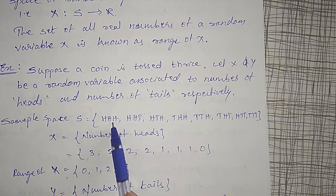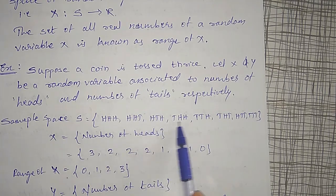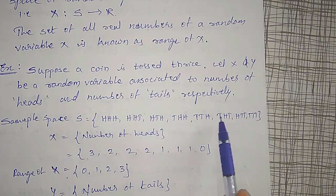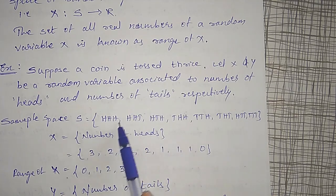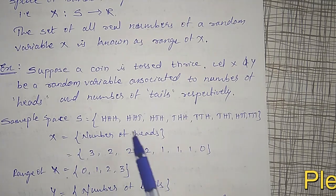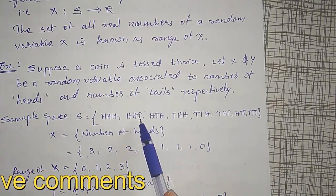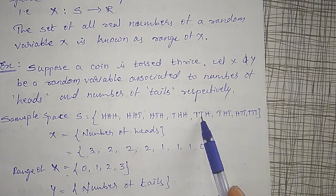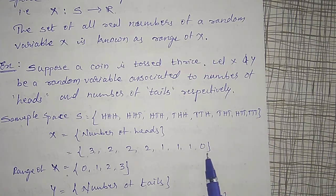For three tosses, all possible outcomes are: HHH, HHT, HTH, THH, HTT, THT, TTH, TTT. For each element of the sample space I am assigning one real number X as the number of heads. So HHH gives X=3. In the next outcomes the number of heads are two, two, two, then one, one, and zero.